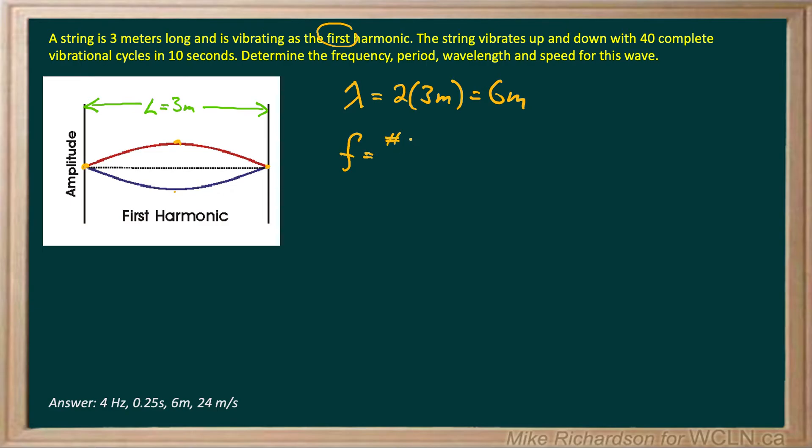Number of cycles or waves divided by time. Number of cycles is 40 and that takes 10 seconds. We know we've got frequency because our units are 1 over seconds and I end up with a frequency of 4 Hertz.